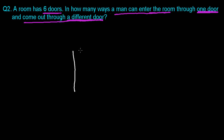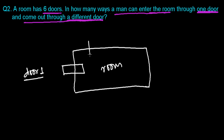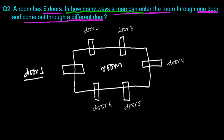Let me make a diagram of the room. I'm watching from the top. This is my room, and here is door one, door two, door three, door four, door five, and door six.